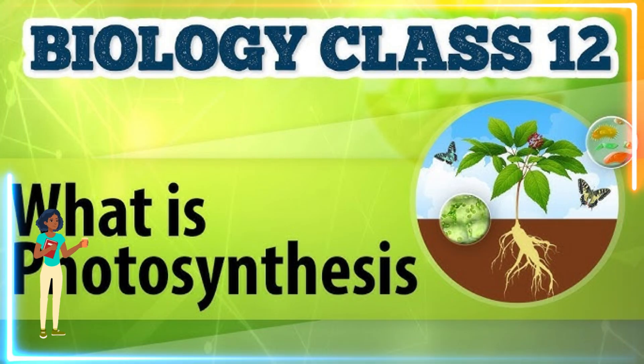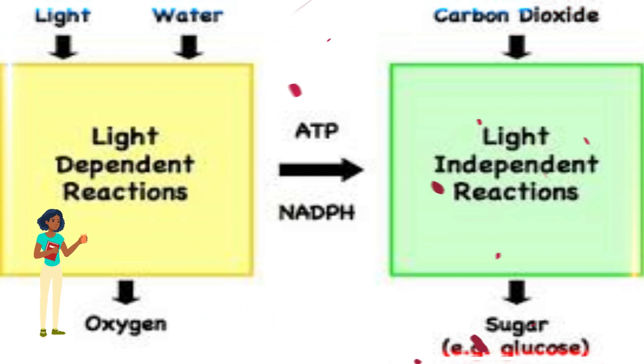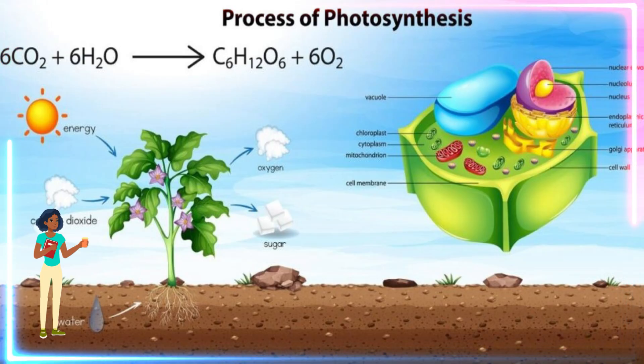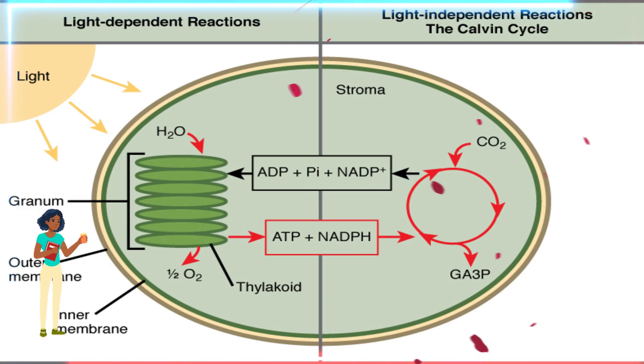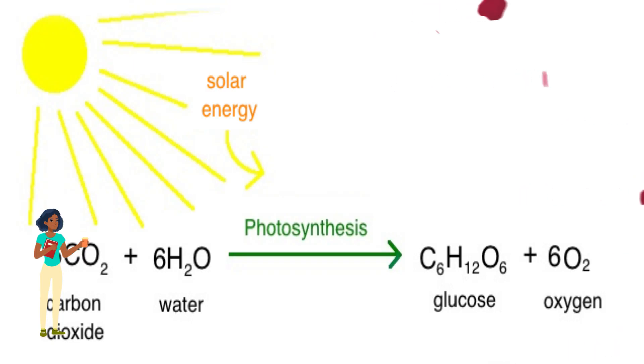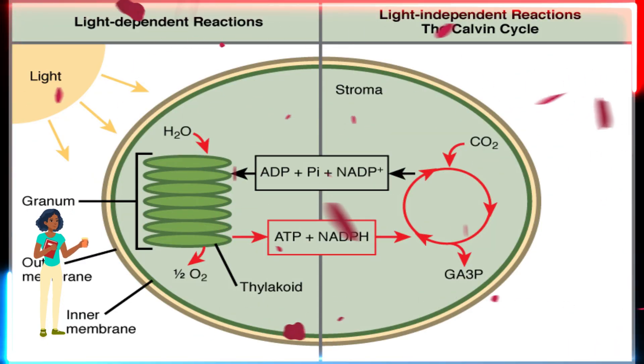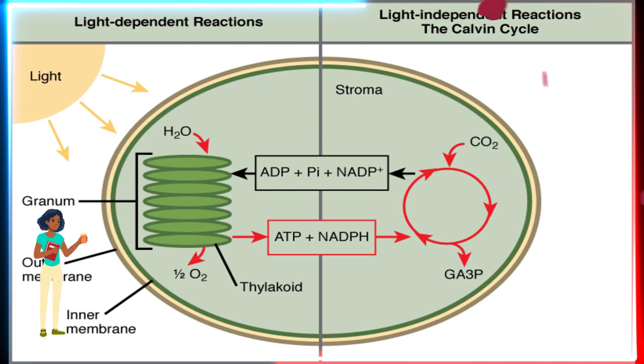Photosynthesis is divided into light-dependent reactions and light-independent reactions, Calvin cycle, which are linked by energy-carrying molecules. The light-dependent reactions occur in the thylakoid membranes of the chloroplast, converting light energy into chemical energy in the form of ATP and NADPH and releasing oxygen as a byproduct.